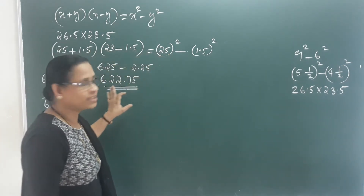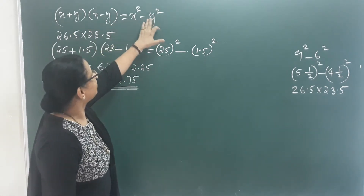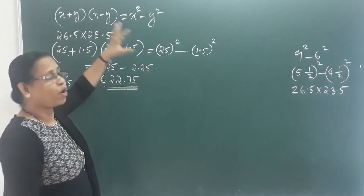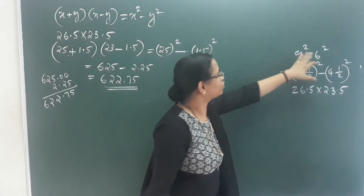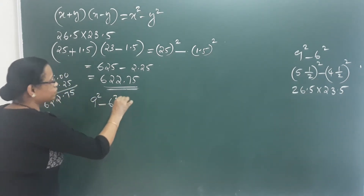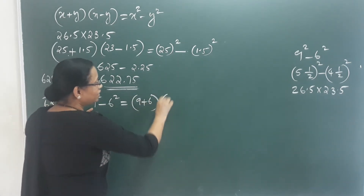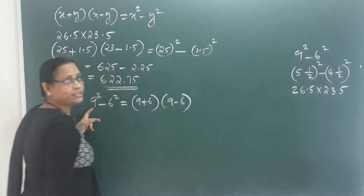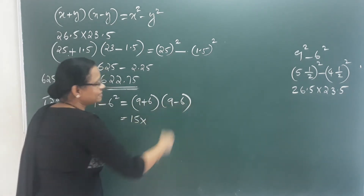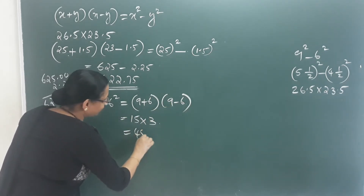Now we have an expansion here and we have to draw it. What is x square minus? This is the difference between two squares. This is the product. Now 9 square minus 6 square — let's take a look. We draw it as 9 plus 6 into 9 minus 6. 9 plus 6 is 15, 9 minus 6 is 3. This is equal to 45.